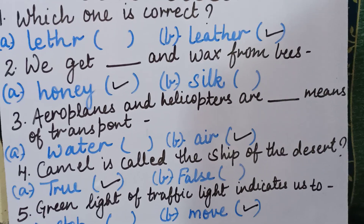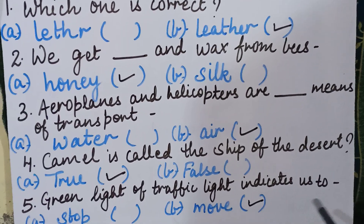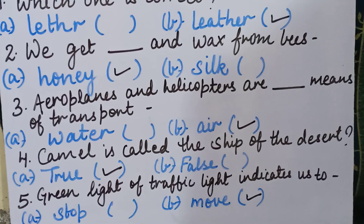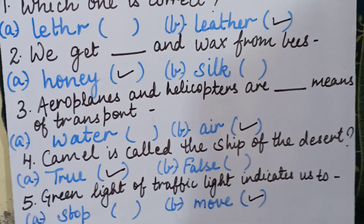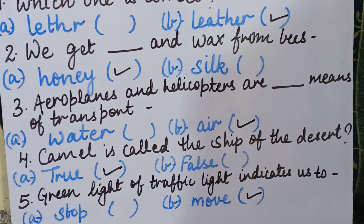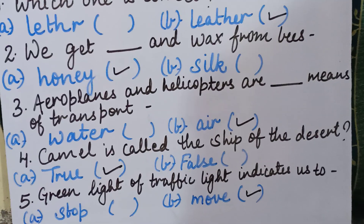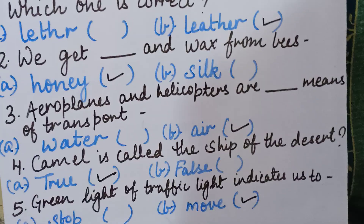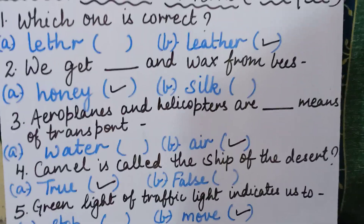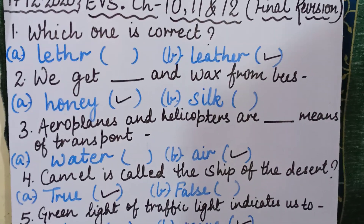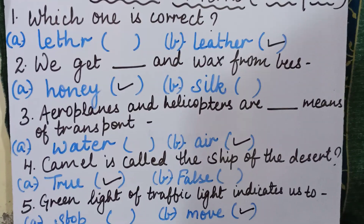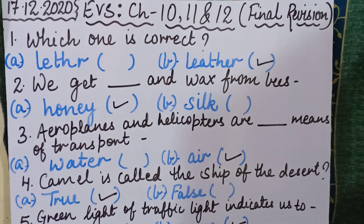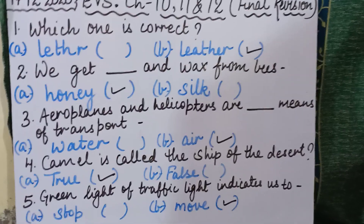Fifth question: the green light of a traffic light indicates us to stop or to move? The correct answer is to move, so we will put a tick in front of move. I hope all questions from 1 to 5 are clear to you all. I am repeating them — please listen once again very carefully.